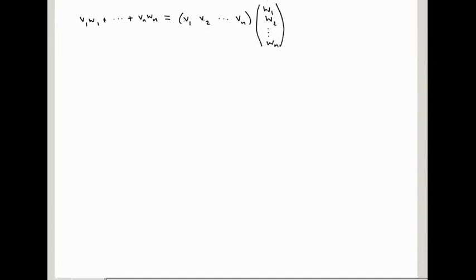Okay, multiply this out, we get V1 W1, V2 W2, to Vn Wn, all summed together. And okay, technically this gives us a one-by-one matrix, but really we can think of that as just being a number, because it's only got one entry.